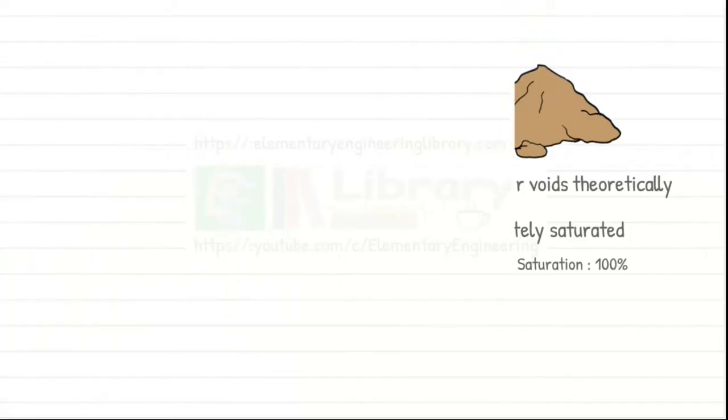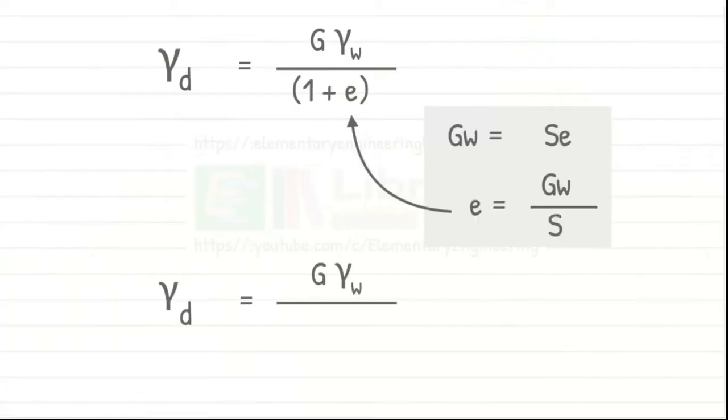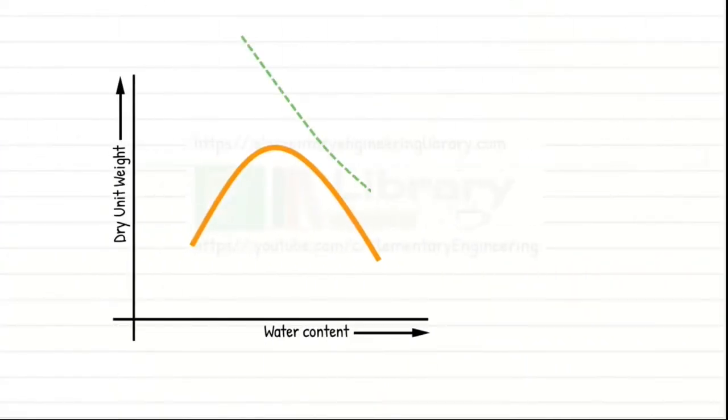In our previous video of a standard proctor test, we established the equation for theoretical maximum dry unit weight. Using this equation, we can calculate theoretical maximum dry unit weight of soil for any value of water content. We draw the line indicating the theoretical maximum dry unit weight along with the compaction curve. It is known as zero air void line or 100% saturation line.